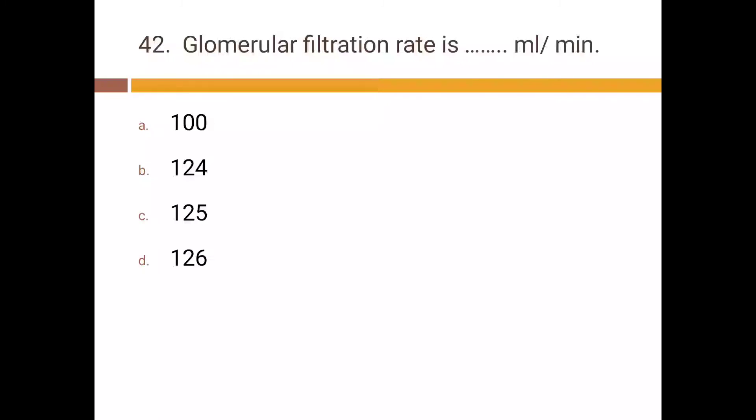Glomerular filtration rate is how many milliliters per minute: a) 100, b) 124, c) 125, d) 126. Correct answer is c) 125.